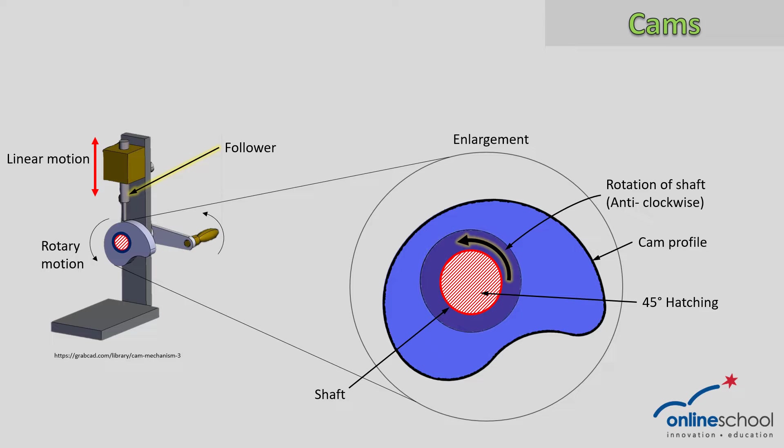Then on the right hand side of the screen, we also see the indication of the rotation of the shaft, and in this case it is turning anti-clockwise. Then we have the cam profile, which is on the outside edge of the cam, and that profile is unique. We have various different types of cam profiles, each doing its own specific job. We also have the 45-degree hatching that must always be indicated on the cam shaft itself.